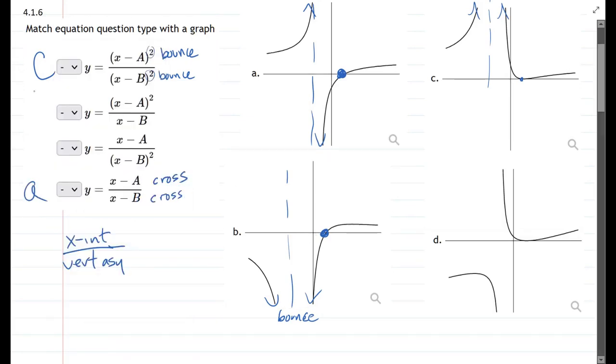So that means the A graph has the cross x-intercept and the cross vertical asymptote. So it has to be A.